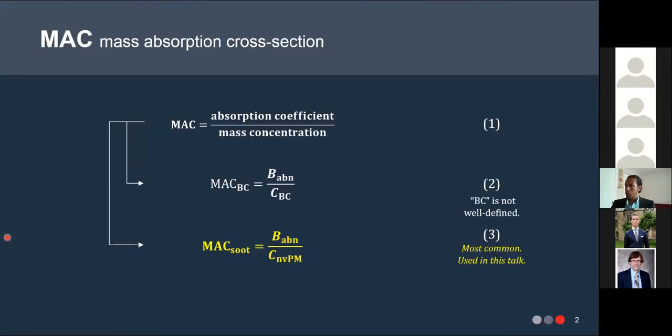I'm talking about the mass absorption cross-section of soot. This is the ratio of absorption coefficient to mass concentration. When you define that ratio, you have some choice of what you mean by especially mass concentration. In this talk, I'm going to be using the mass concentration of non-volatile PM produced by combustion sources, because the first definition here is not well defined.